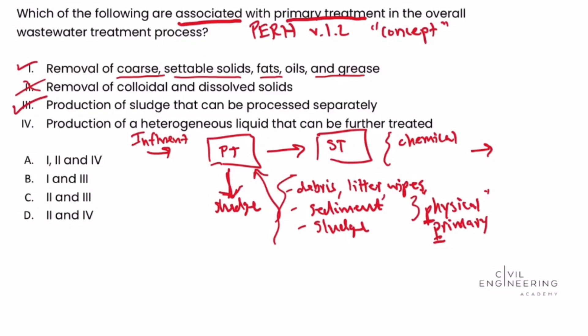Roman numeral four, production of a heterogeneous liquid that can be further treated. Well, we said yes, the goal of primary treatment is to produce a liquid that could go on to secondary treatment, but it's a homogenous liquid that's produced. Roman numeral choice four says heterogeneous. We want a homogenous liquid being produced for that statement to be true. So Roman numeral four is not correct.